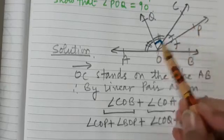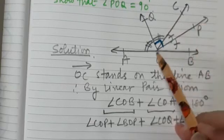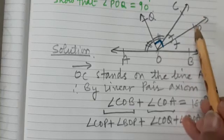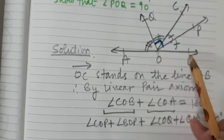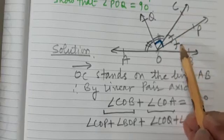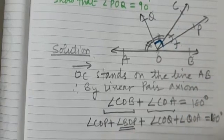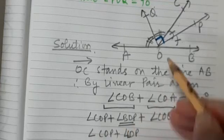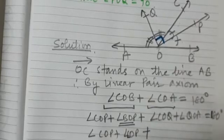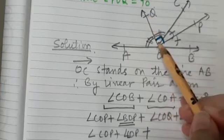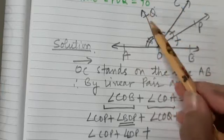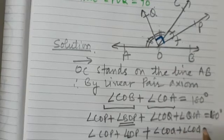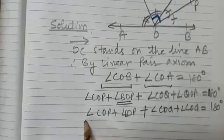Since OP is the angle bisector of angle BOC, angle POC and angle BOP are equal. So we replace angle BOP with angle COP. Similarly, since OQ is the angle bisector of angle AOC, angle AOQ equals angle COQ. So we replace angle AOQ with angle COQ, giving us: angle COP + angle COP + angle COQ + angle COQ = 180 degrees.